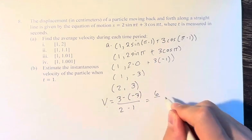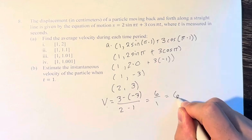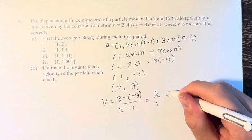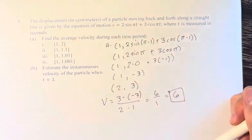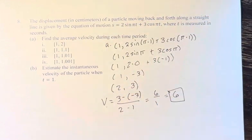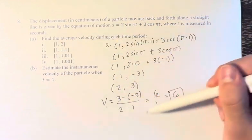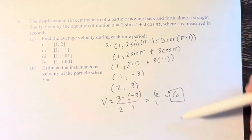3 minus negative 3 is 6, 2 minus 1 is 1, 6 divided by 1 is 6. Therefore the average velocity over the time period from 1 to 2, and I know I didn't calculate 2 but that'll be on the next page, can be found by the slope between these two points, which gives us 6.